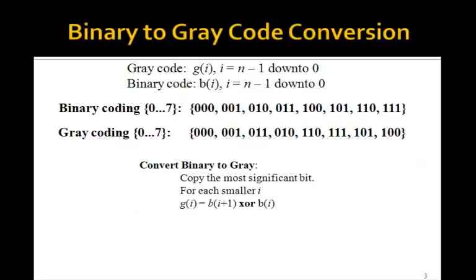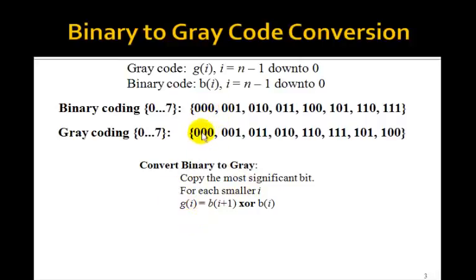There's also an algorithm for converting any binary sequence to a corresponding gray code. You copy the most significant bit, so the 0s become 0 here. And then for each smaller bit, the next g_i is just b_(i+1) exclusive-OR with b_i — that is, this most significant bit exclusive-OR with the next one. So 0 XOR 0 is 0. 0 XOR 0 is 0.